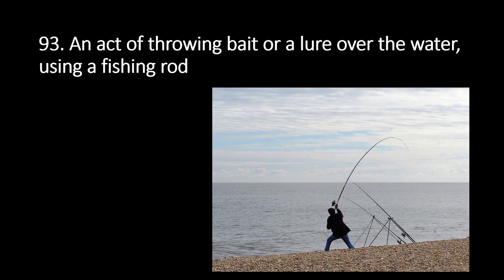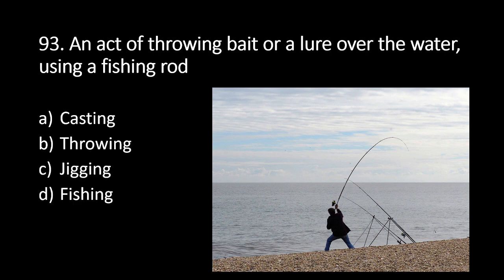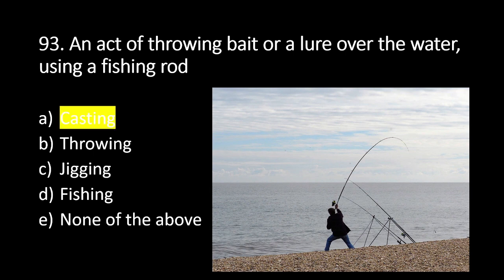Number 93: an act of throwing bait or lure over the water using a fishing rod. A. Casting, B. Throwing, C. Jigging, D. Fishing, E. None of the above. The answer is A. Casting. Casting is an act of throwing bait or lure over the water using a fishing rod.